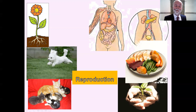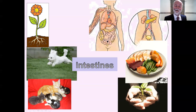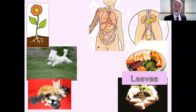And reproduction — production, remember, is making something. Reproduction is making new ones. This cat has had some kittens and has reproduced. Intestines are down here — lower down than your stomach — and they take the stuff you've eaten after we've got the goodness out of it. Leaves: one leaf, two leaves — the things on the plant that face up to the sun and pick up its rays.